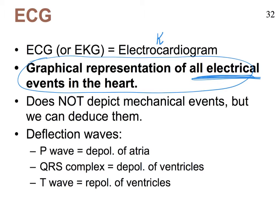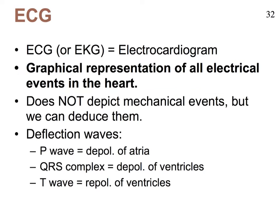Be sure you understand what we're talking about here. An EKG is made up of different waves we refer to as deflection waves. We'll focus on just the three major ones — there are additional ones, and there may come a time where you take a course specializing in EKGs, but that's beyond the scope of this class. So we have the P wave, the QRS complex, and the T wave.